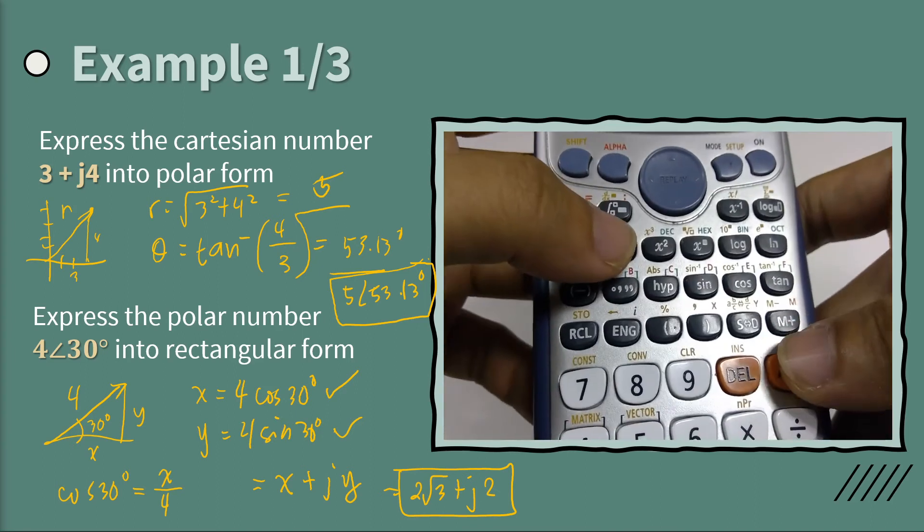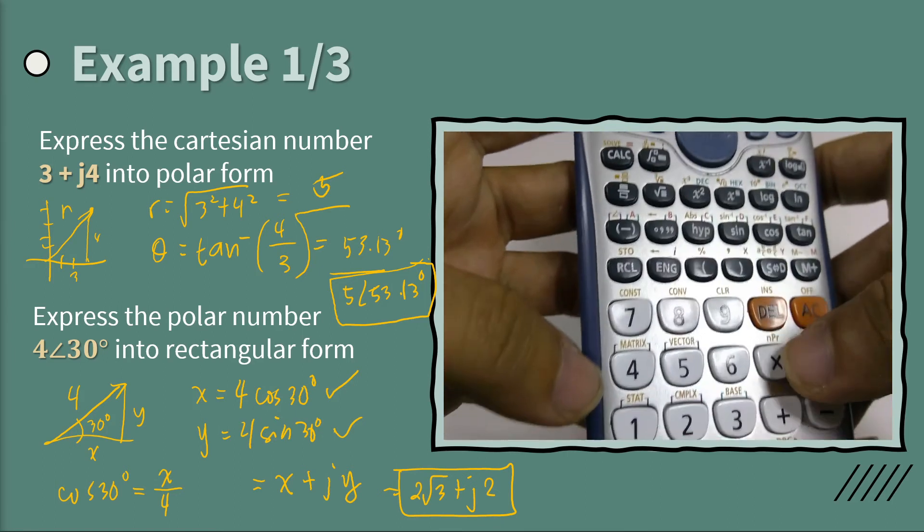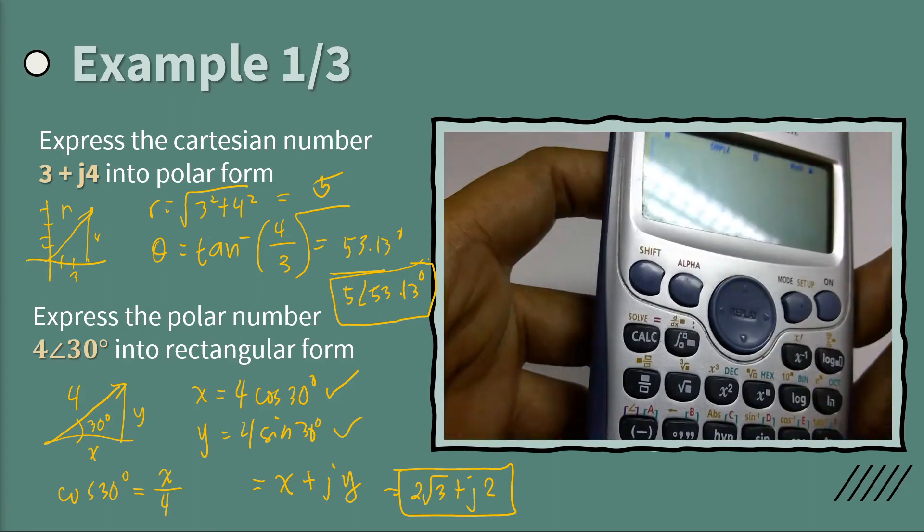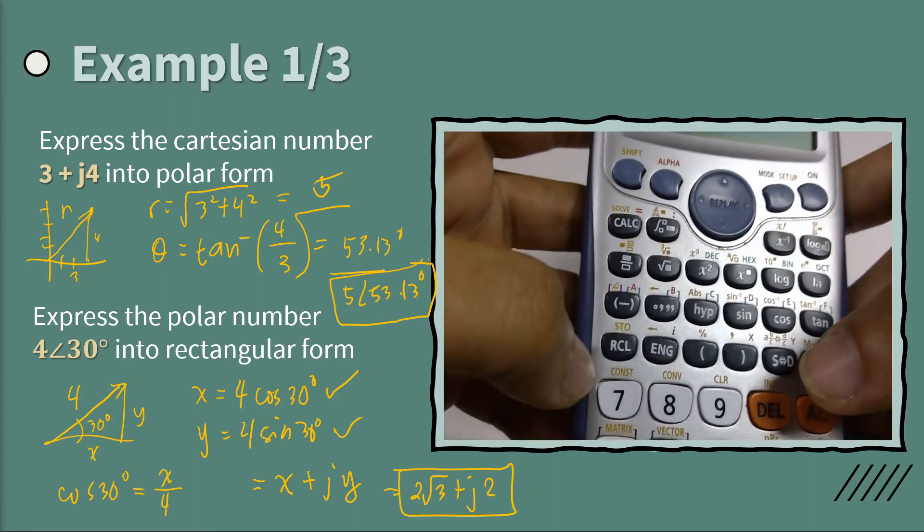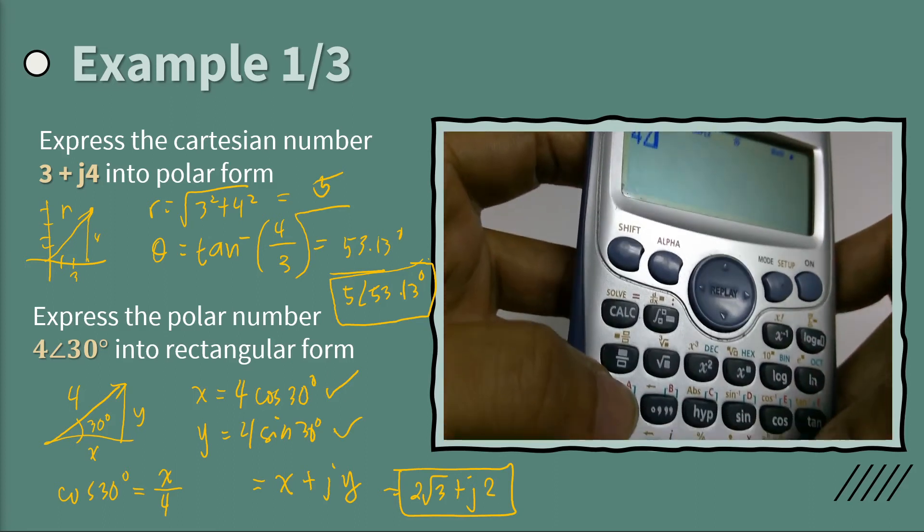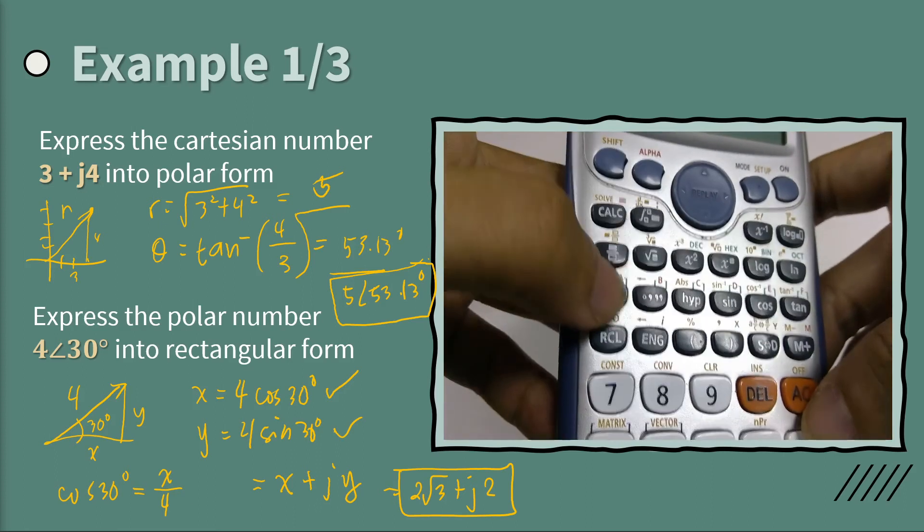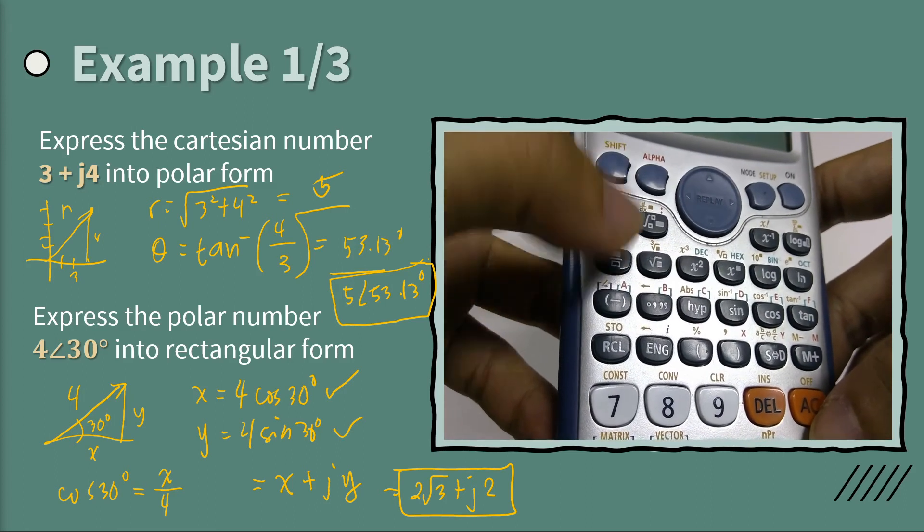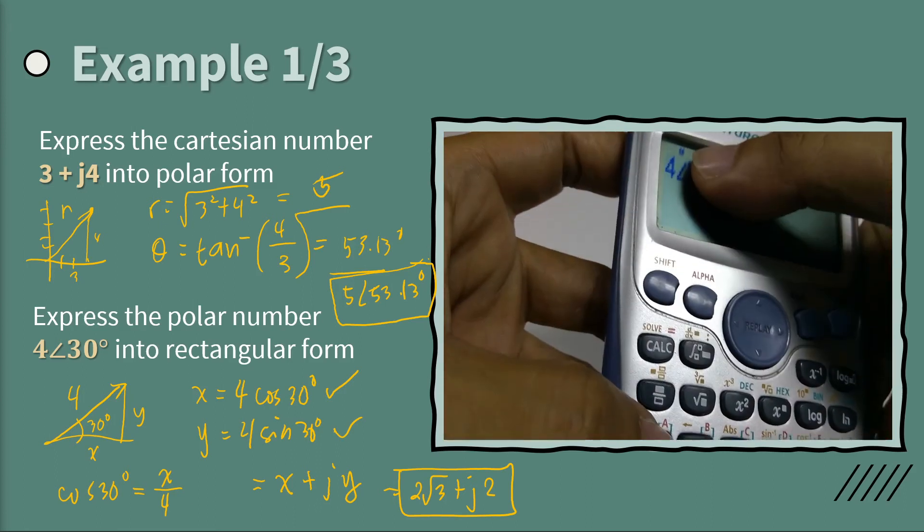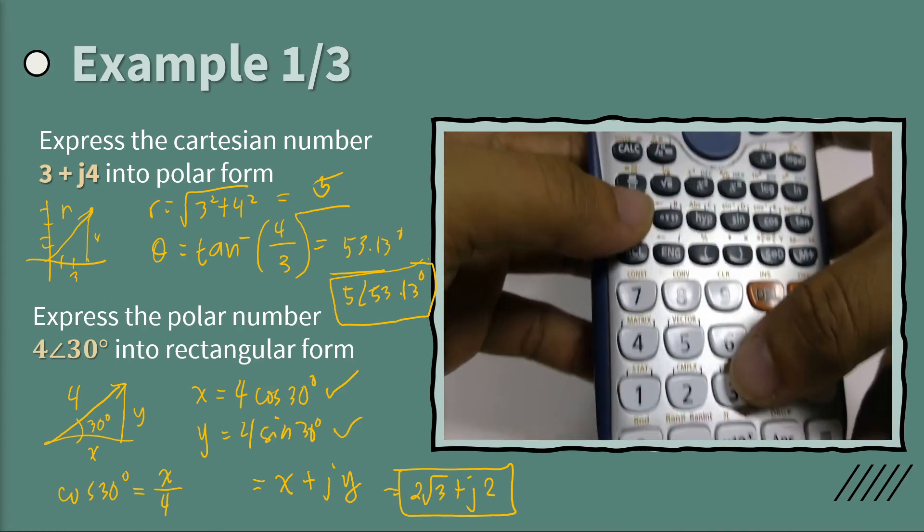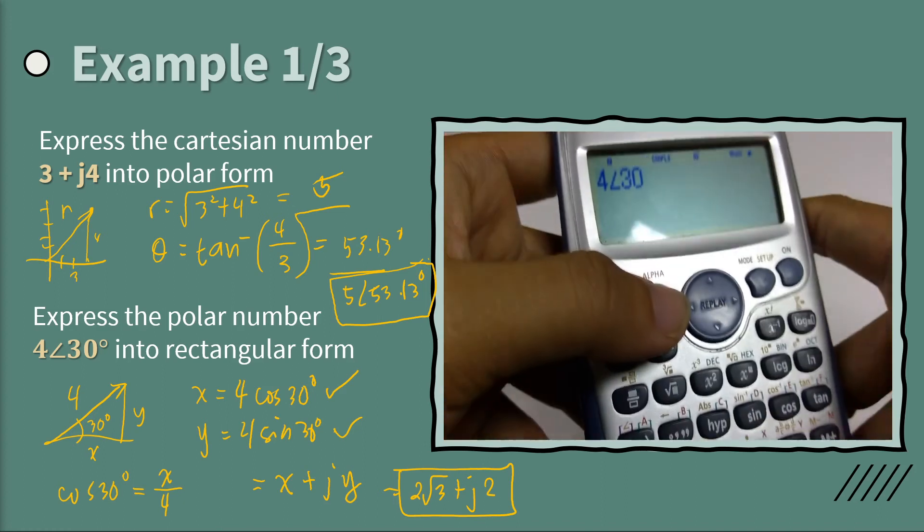And then if you want to convert the second problem, the polar form, we first write the 4 angle shift angle. So to get the angle, you just press shift and then this one to get this angle sign. Then you encode 30.